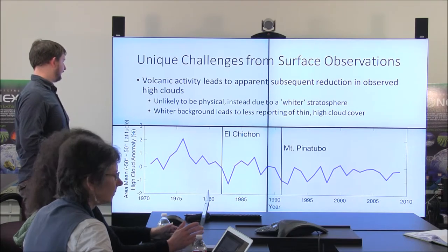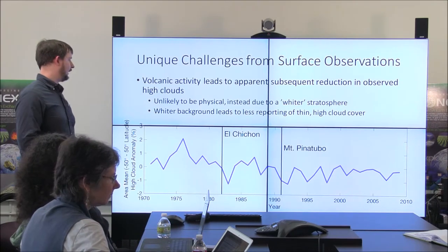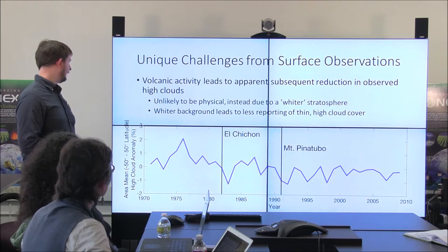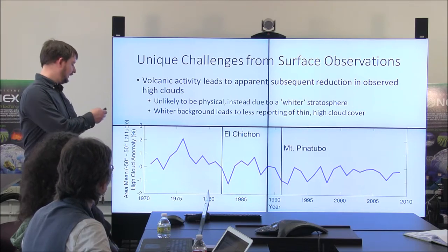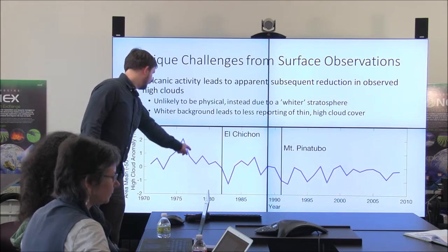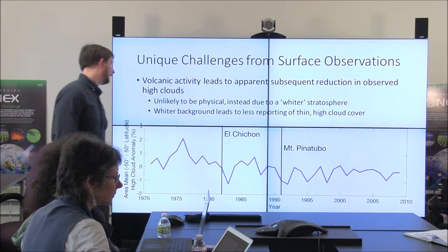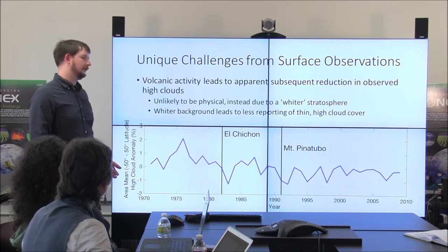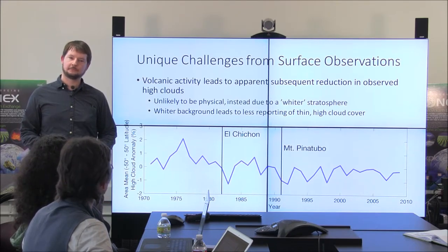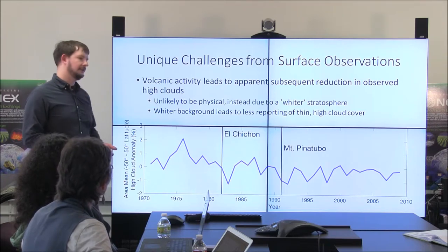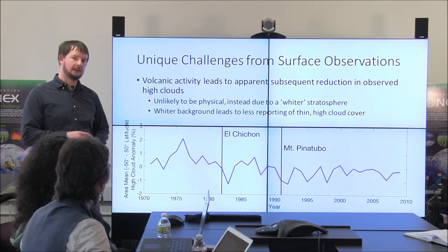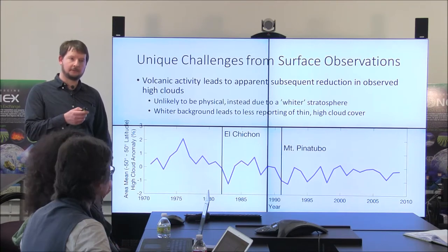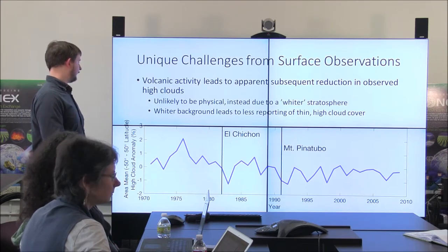The record is actually fallible to volcanic eruptions. This is the high cloud record from 1971 to 2009 between 50 degrees north and south latitude, and you see big minima after eruptions in 1982 and 1991. We don't think the volcanoes are actually causing high clouds to decline — instead, we think they're obscuring the view of clouds because you have a white stratosphere instead of a blue sky. Wispy, thin cirrus clouds are much less visible against a white background. So you have to be aware of these issues — an eruption might produce a discontinuity in your cloud record just because it's really hard to observe clouds.